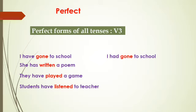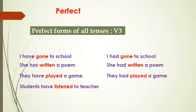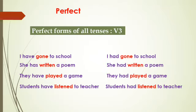'I had gone to school' — 'have' changes to 'had', but 'gone' remains the same. 'She had written a poem.' 'They had played a poem.' 'Students had listened to teacher.' Gone, written, played, listened remain the same. They are called non-finites. That is verb three in perfect tense.